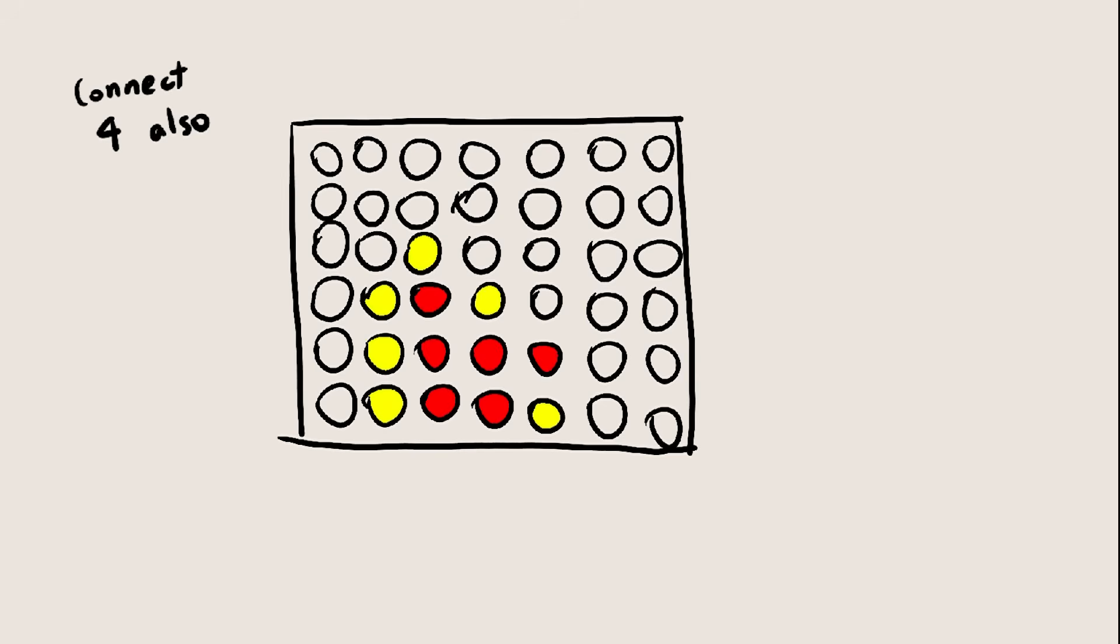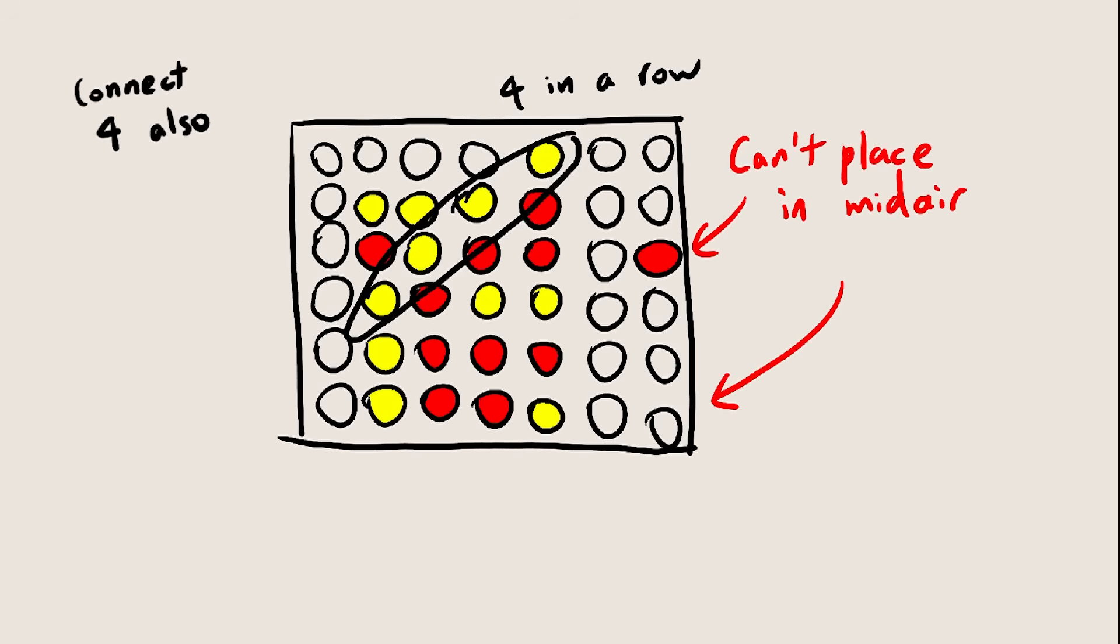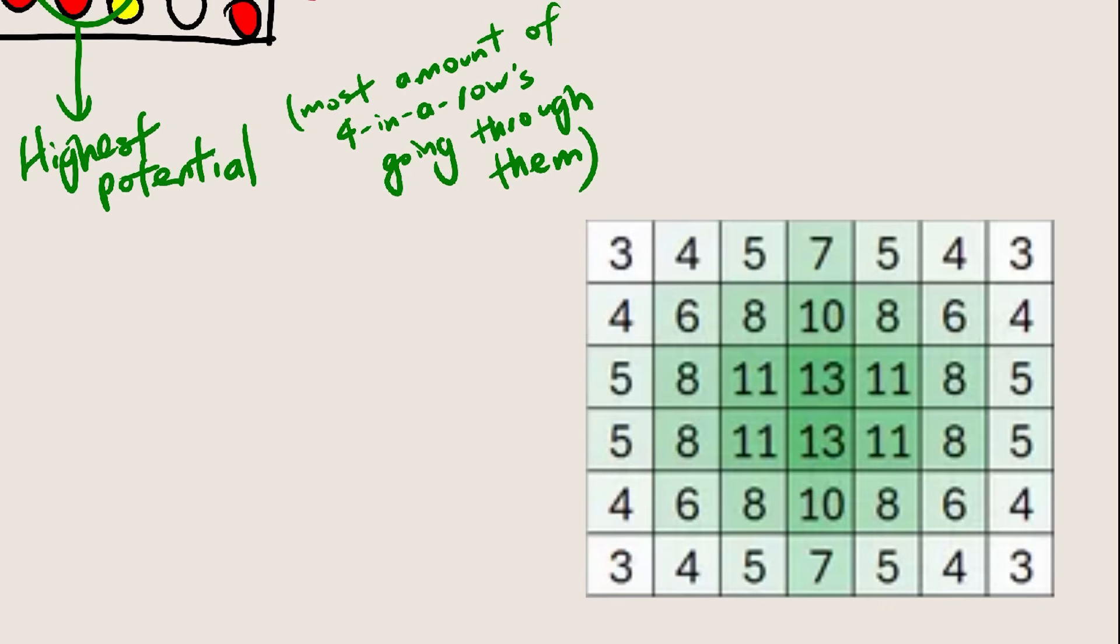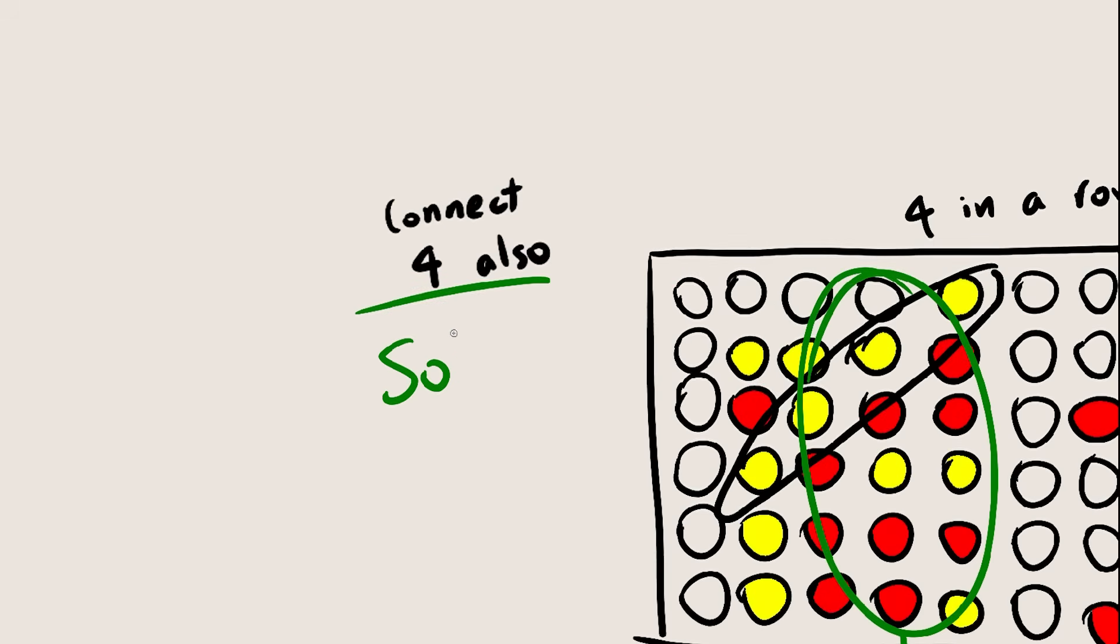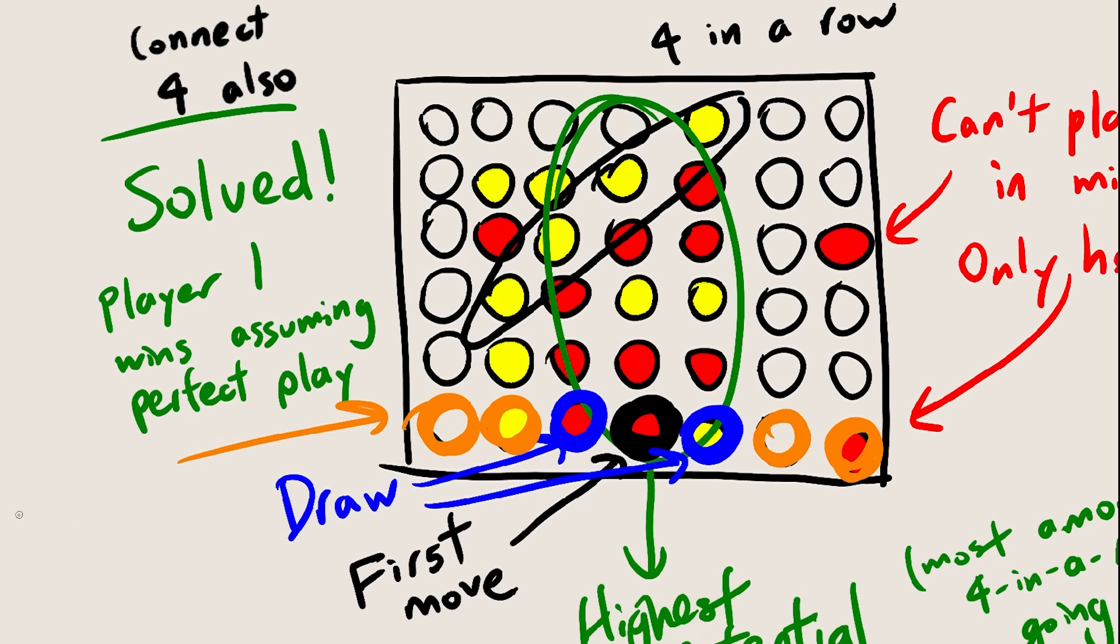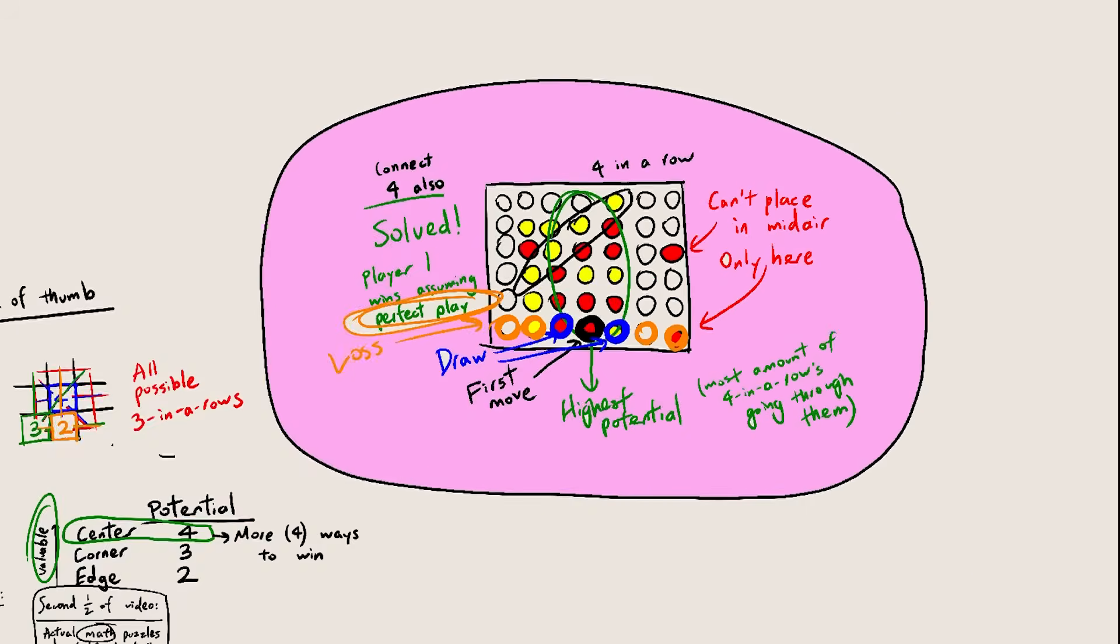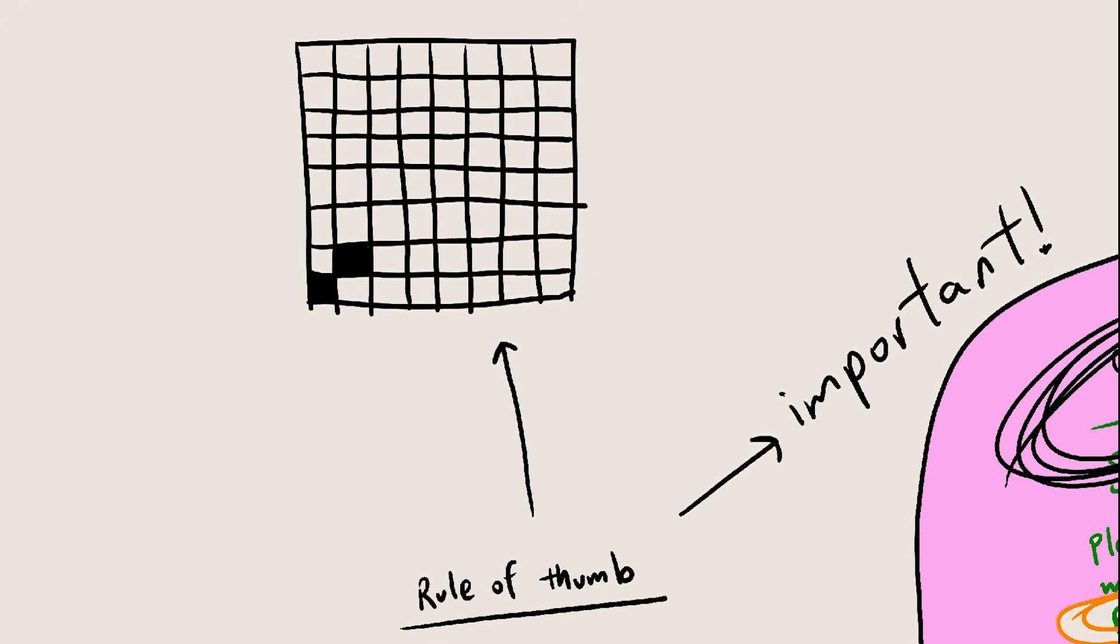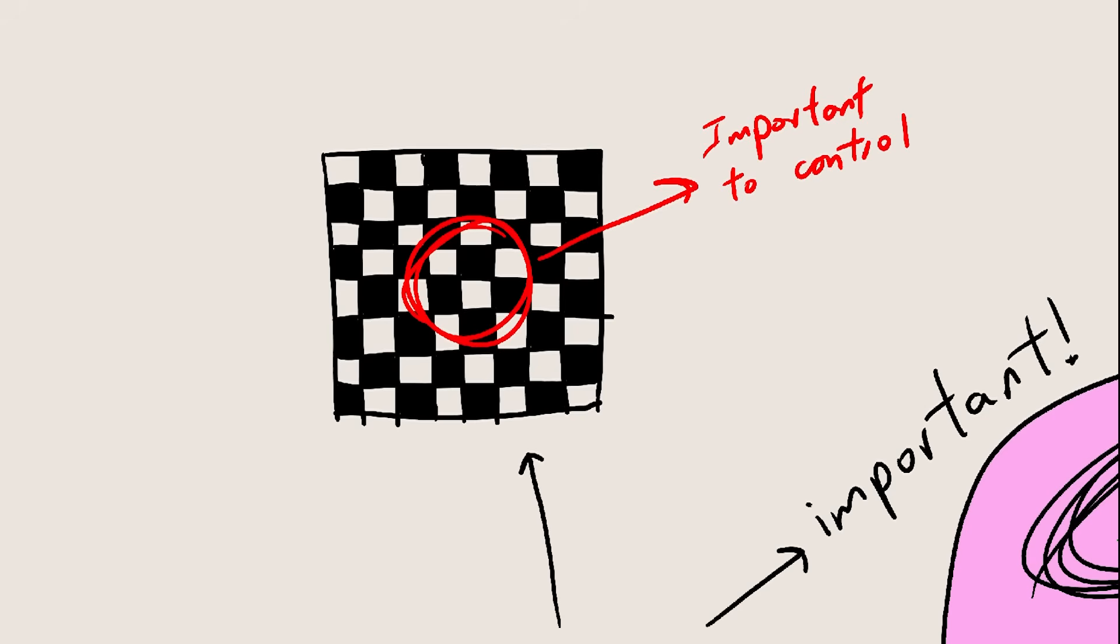The same idea applies to connect 4, where you try to get 4-in-a-row instead of 3. Also, there's gravity. These spots in the center have the most potential. They have the most 4-in-a-rows going through them. Here's a complete map. You can see that the closer the position is to the center, the higher potential. In fact, connect 4 has been solved. The person who goes first always wins if they play correctly, but their first move must be to go in the middle. If you go here or here, the best you can do is draw, and if you go on the outskirts where the potential is low, you will end up losing. All this is assuming perfect play, of course. But the point of this connect 4 side tangent is just to say, this rule of thumb is important and decides the winning strategy for many games. I think it might be one of the reasons why control of the center is so important in chess, but I have no idea, I'm 500 elo.